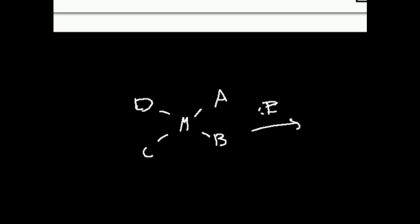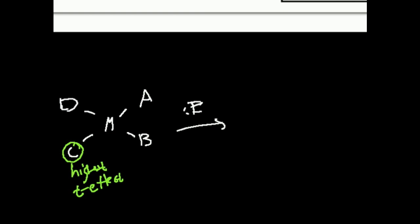So if I were now to indicate to you that C has the highest trans effect, draw the product of that reaction. If C has the highest trans effect, that means D is going to be there, C is still going to be there, B is going to be there.